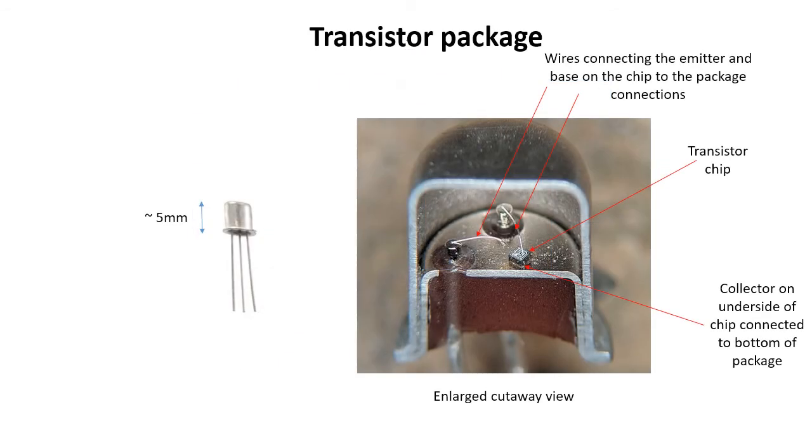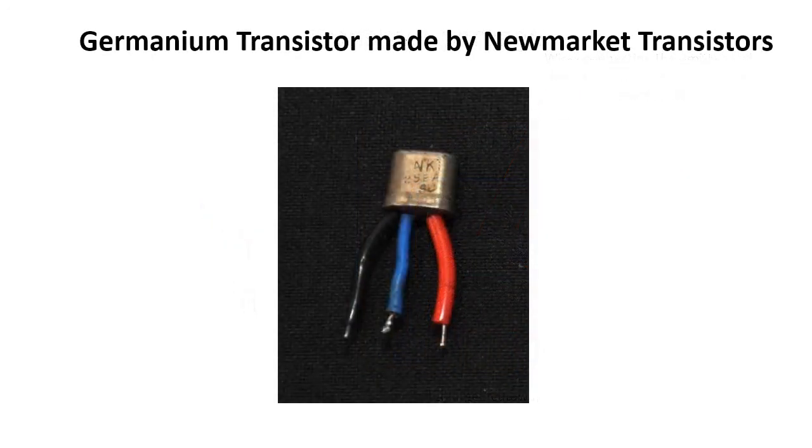The actual transistor is very small, so it's installed in a package for ease of fitting into an electronic circuit. The enlarged cut-away picture shows the transistor in its package, and the internal connections to the pins on the package. This is a packaged germanium transistor made by Newmarket Transistors, a Pye company, in about 1956. This type was used in the first British transistor radio, and examples can be seen in the museum.